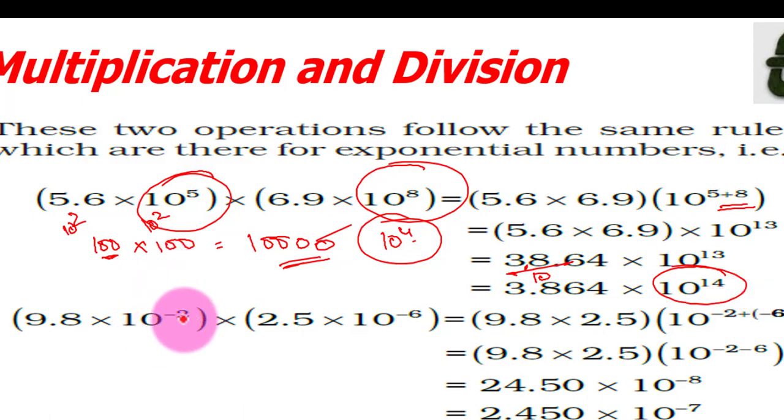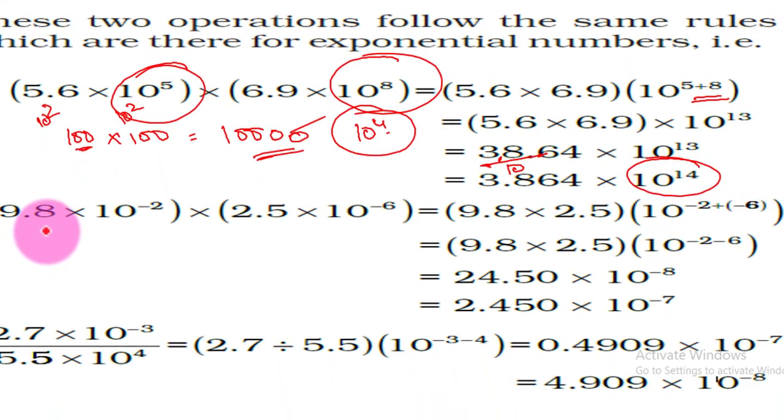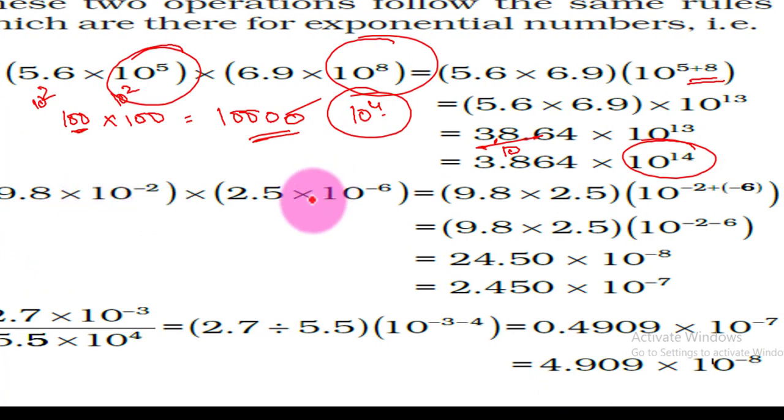Similarly, here's another example with negative exponents: 9.8 times 10 raised to power minus 2 times 2.5 times 10 raised to power minus 6. When multiplying, minus and minus add up, so the same way: 9.8 times 2.5 in the digits, and in the exponent, minus 2 plus minus 6 equals minus 8. This gives 24.5 times 10 raised to power minus 8. Taking the decimal one place left, we add 1, so minus 8 plus 1 equals minus 7, giving 2.45 times 10 raised to power minus 7.